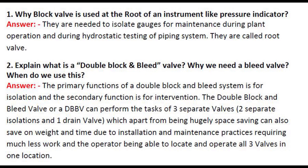Question 2: Explain what is a double block and bleed valve. Why do we need a bleed valve and when do we use this? Answer: The primary function of a double block and bleed system is for isolation and the secondary function is for intervention. The double block and bleed valve (DBBV) can perform the tasks of three separate valves — two separate isolations and one drain valve — which apart from being hugely space saving can also save on weight and time, requiring much less work with the operator able to locate and operate all three valves in one location.